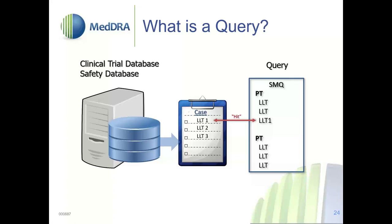This illustration explains the basic concept of running a query on MedDRA-coded data. In the query list or SMQ list, you have PTs listed and under each PT you have LLTs. In your safety or clinical database, you have cases coded with those LLTs. When you execute the query, wherever there is a match between the LLT in your SMQ list and the LLT in your database, those cases are retrieved. So all cases coded to a particular LLT will be retrieved when you execute this query. The same process applies whether you're running an SMQ, customized queries, or modified MedDRA queries.